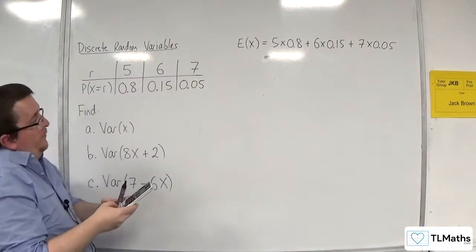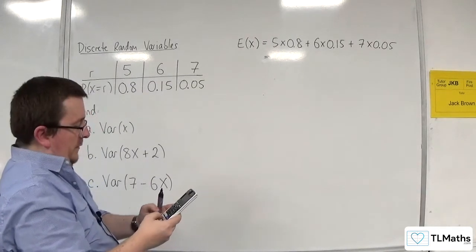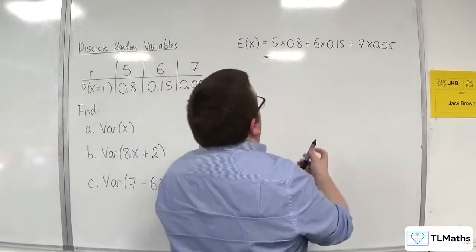So 5 lots of 0.8 plus 6 lots of 0.15 plus 7 lots of 0.05, and we get 5.25.